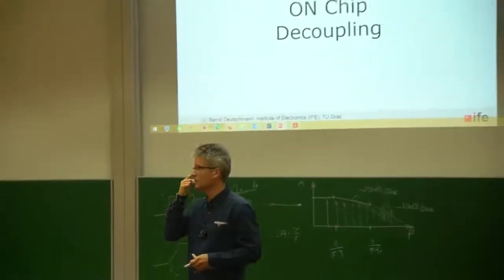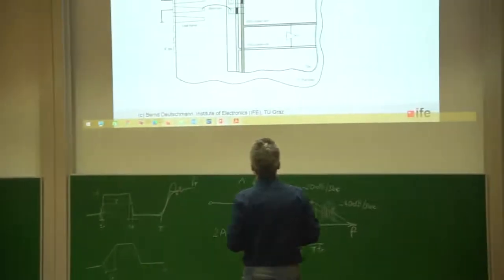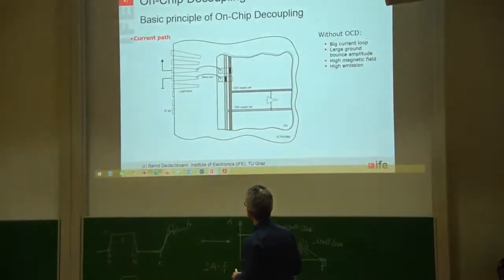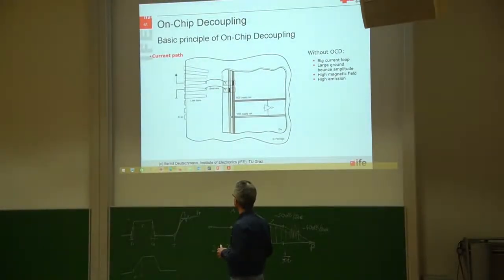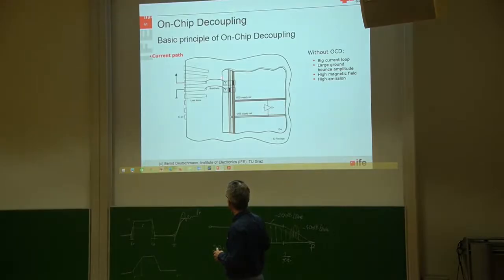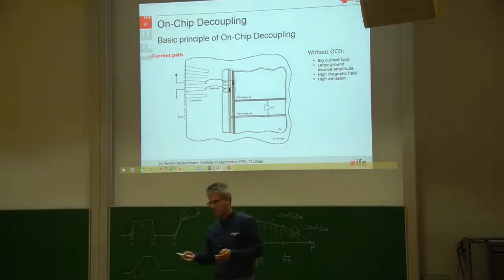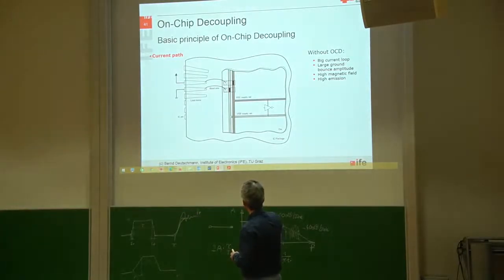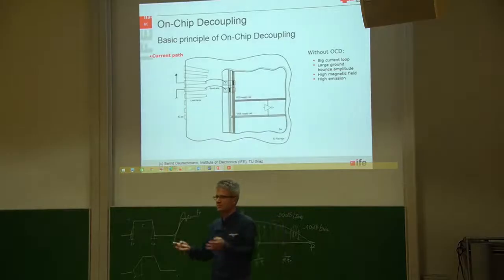The basic principle of on-chip decoupling: this is the situation without any kind of on-chip decoupling. We have the power supply pin, the lead frame, the bond wire going to the bond pad and then into the metal ring around the chip. From the metal ring we are driving supply rails into the core logic.